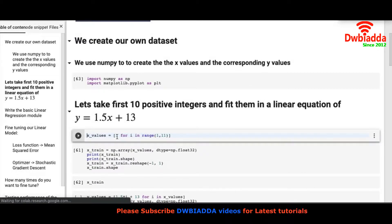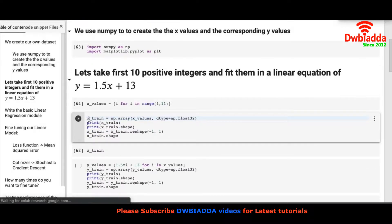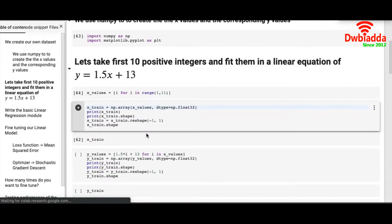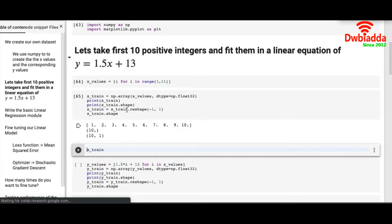We are creating a list from 1 to 10 and we are naming it as X underscore values. We are creating a numpy array from that list and we are calling it X underscore train. And we are doing some preprocessing on the data. Once you create a numpy array from the list, the numpy array will look like this which is an array of float32 and it has a shape of 10 comma nothing.